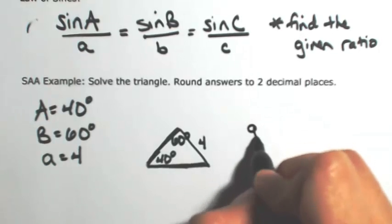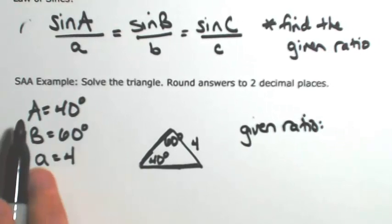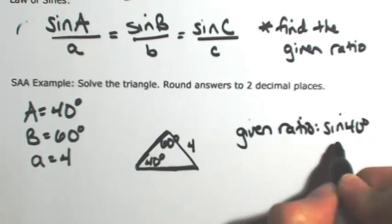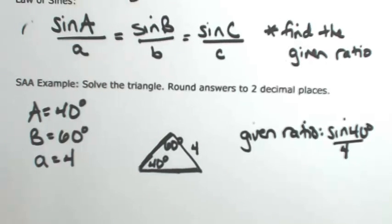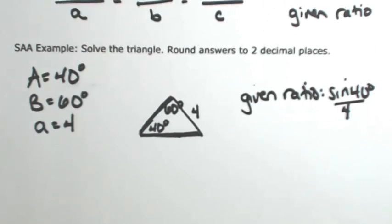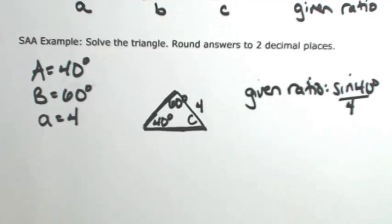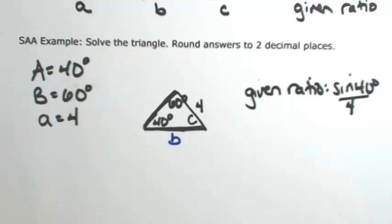The given ratio that we're going to use is the one involving A. So sine of 40 degrees over 4 is going to be proportionate with angle B and side b, and angle C and side c. I'm going to identify what I don't have right now—that's angle C. I'm going to use blue for side b and red for side c.